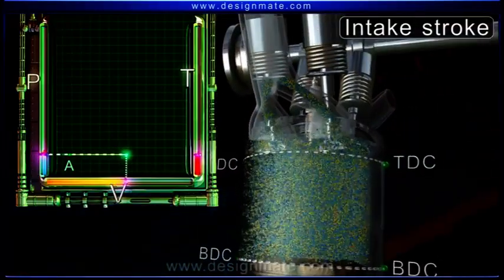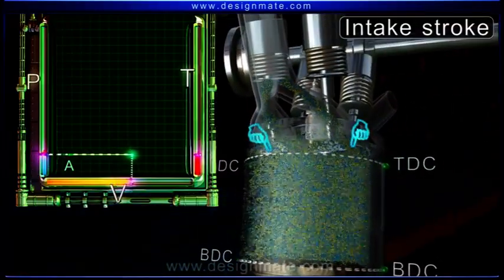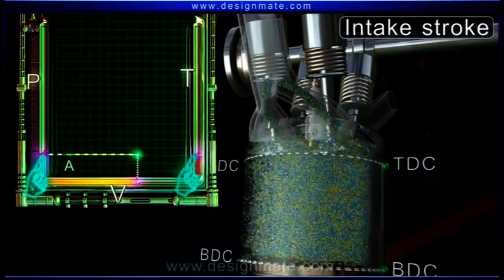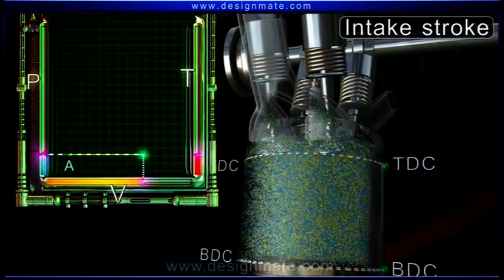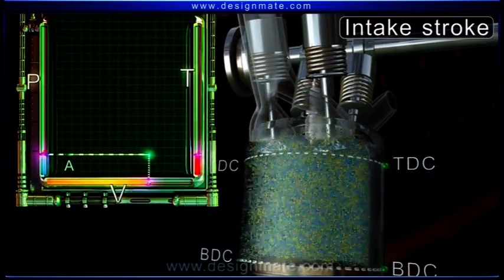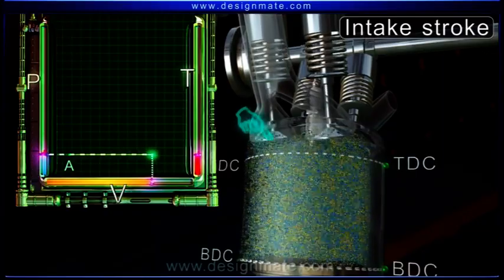As the intake valves are open, the pressure and temperature of charge inside the chamber remain constant. When the piston reaches BDC, intake valves close.